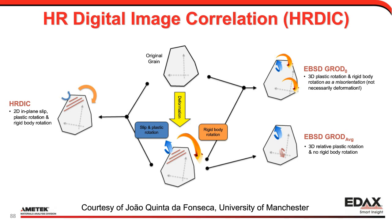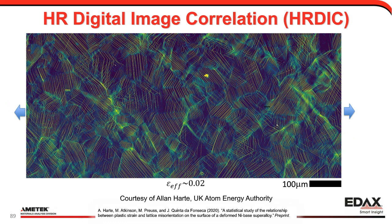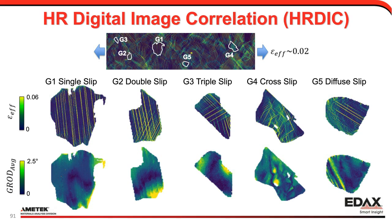Here's one more example of HRDIC, courtesy of Alan Hart, a former student of Professor Fonseca. You see a beautiful high-resolution digital image correlation map over quite a few grains, with the tensile strain applied horizontally. Looking at three to five different grains with different characters of slip lines: grain one is single slip, grain two double slip, grain three triple slip, grain four shows significant cross slip, and the last grain has a more diffuse nature. You can see both the digital image correlation measurements and the EBSD GROD average measurements. The cross-slip areas tend to show a higher intensity in the GROD average — an interesting result to keep in mind.